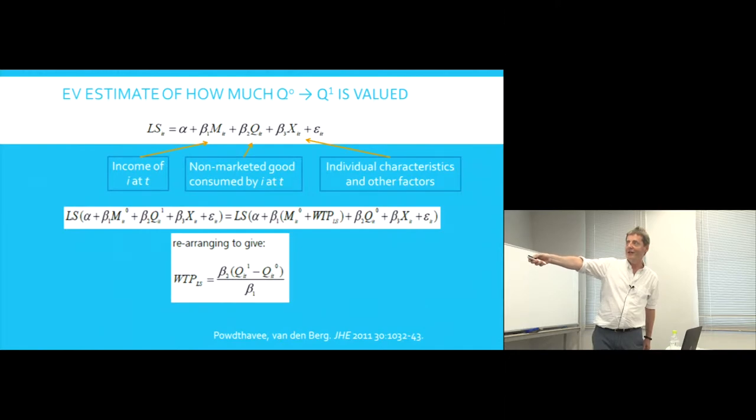Don't ask me why economists have always used M to measure income. It depends on Q. This could be some non-marketed good that you consume, and particularly in our case, it could be something to do with your health. And it could also depend on various individual characteristics and then there's an error term. So life satisfaction being explained basically by your income, the non-market good that we're interested in, which may be health or health-related, and then your individual characteristics.